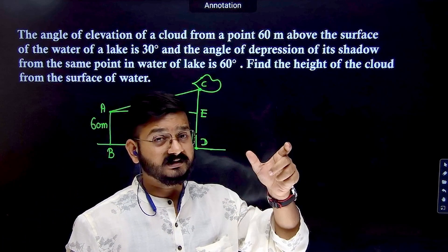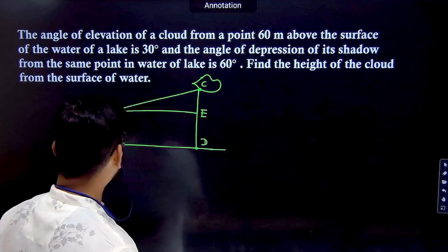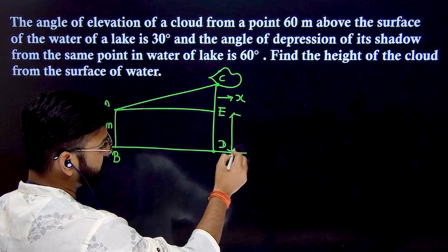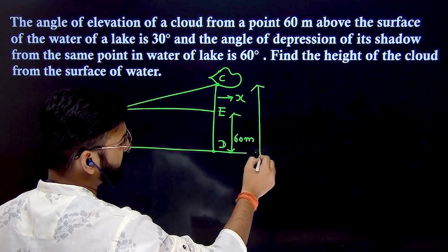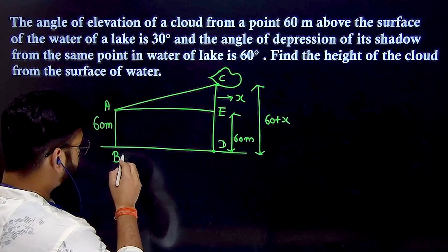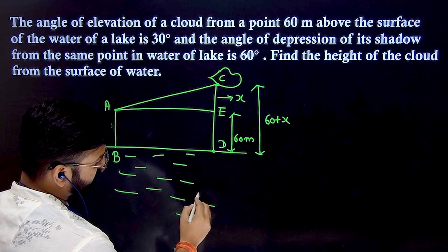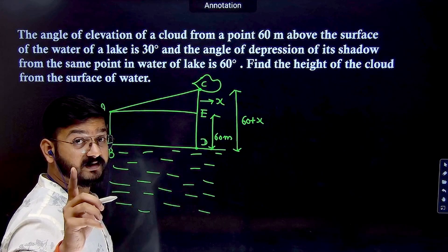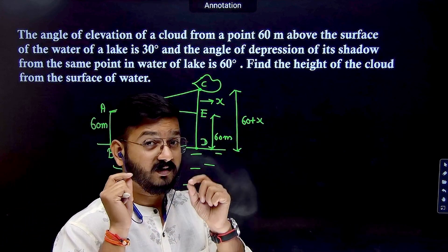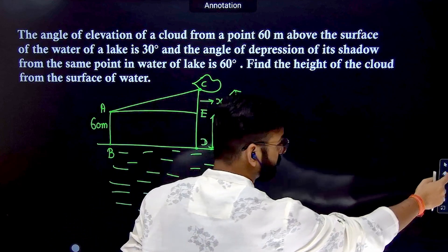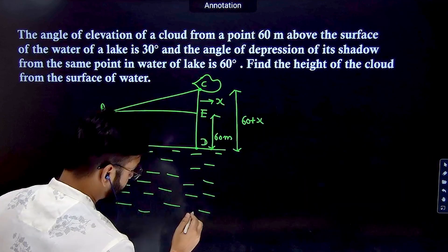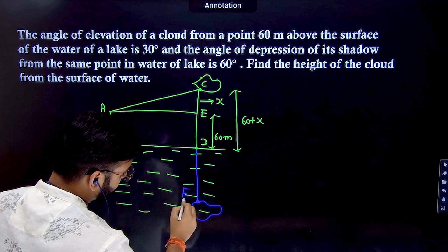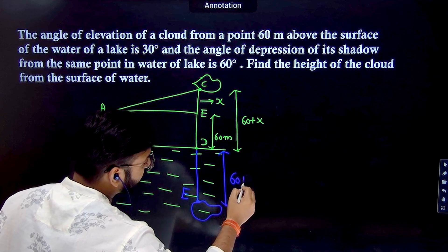The surface of the lake is considered as a plane mirror. The property of a plane mirror is that object distance and image distance are the same. If I take this distance as X, and ED equals AB which is 60 meters, then the total height of the cloud from the surface is 60 + X. Let's draw the lake with water. The object distance equals the image distance because the lake surface acts as a plane mirror.